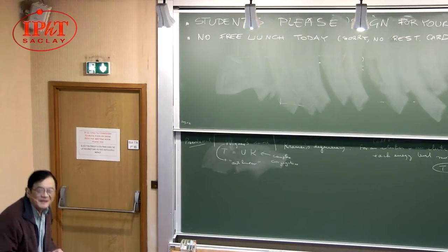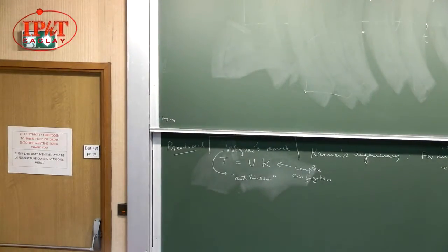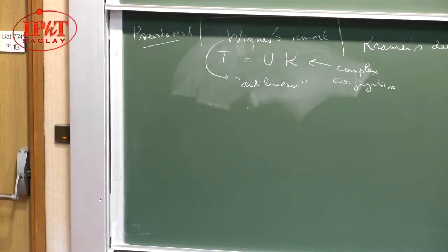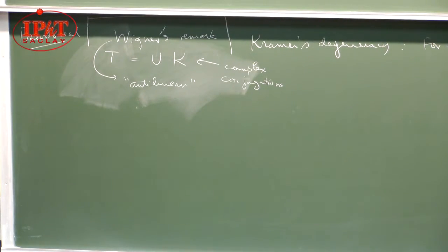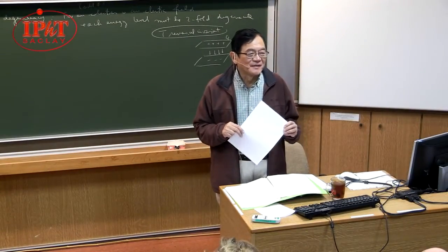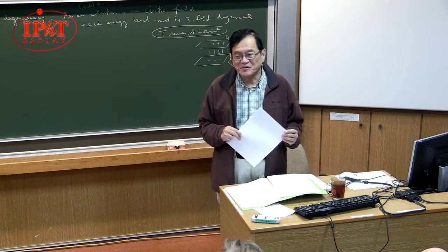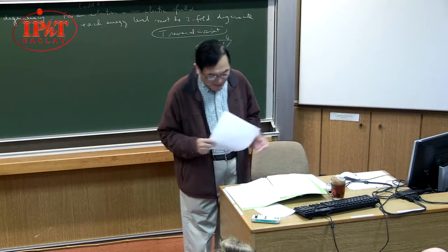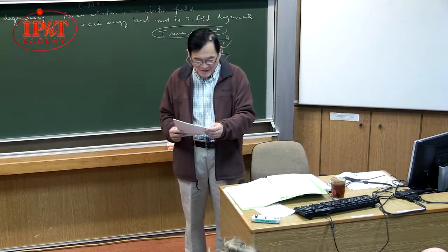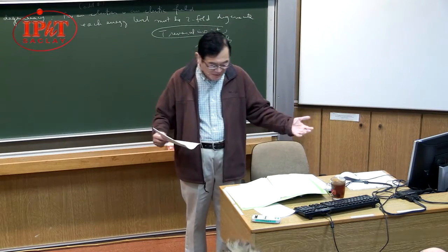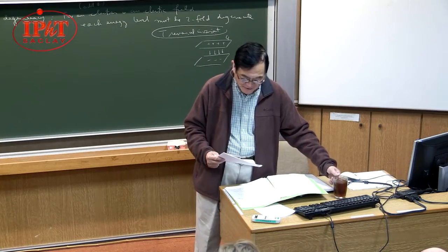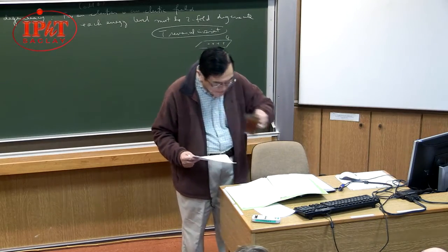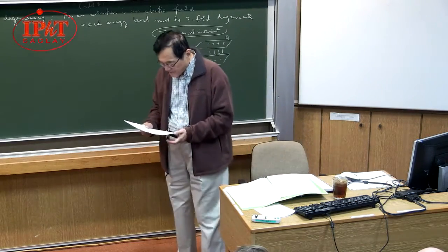When I was writing my group theory book, I read a biography of Wigner, full of interesting remarks. He grew up in Budapest and wanted to study physics. His father asked how many jobs in theoretical physics there were in Hungary, and he came back and said one — and somebody had already taken that job. So he went to study physics in Germany, but came back with no job and had to work for his father in the leather factory, until he found an opportunity to move on.